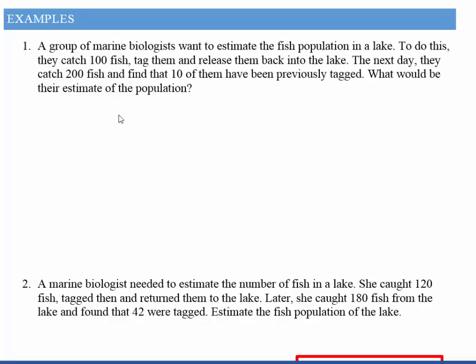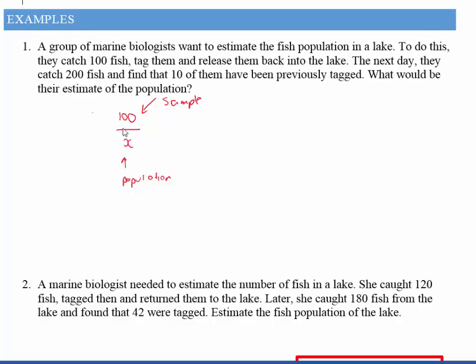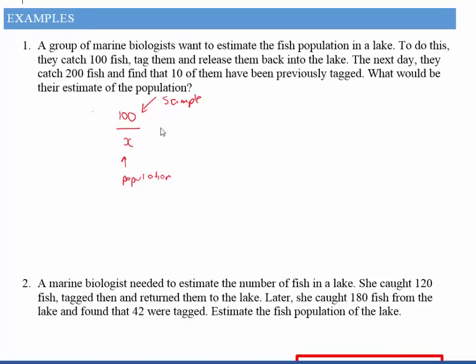So we imagine I've got 100 fish and I have some population that I'm not sure about. So down here is my population, and on the top here I'm going to have my sample. Okay, so I took a sample of 100 out of a population that I don't know about.